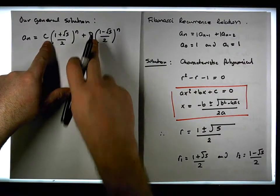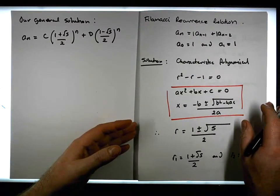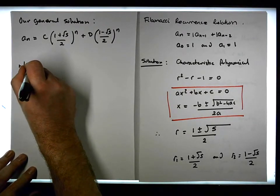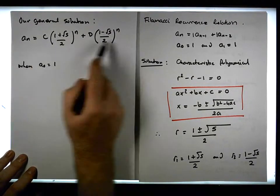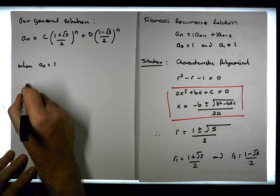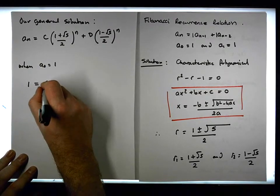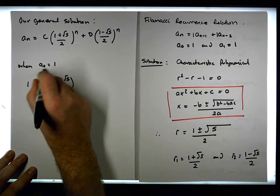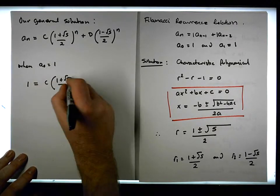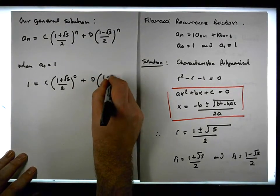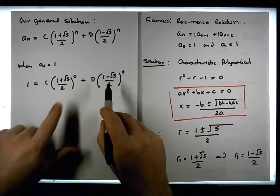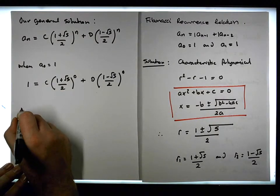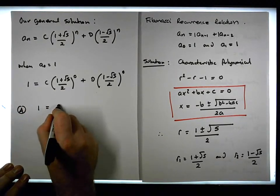We need to define c and d. We know the initial conditions for Fibonacci: a0 = 1 and a1 = 1. When a0 = 1, we get 1 = c times (1 + √5)/2 raised to the power of 0, plus d times (1 - √5)/2 raised to the power of 0. Since any number raised to the power of 0 equals 1, our first equation is: 1 = c + d.